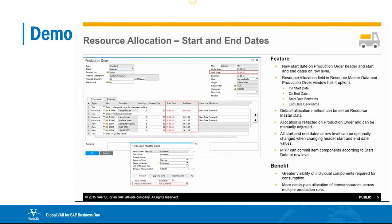The second update to the production module in version 9.2 is the introduction of a start date at the header level and row level dates.